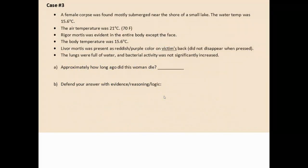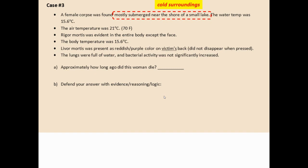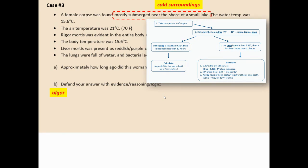Case three: a female corpse found mostly submerged near the shore of a small lake. Water temperature is 15.6 degrees — very cold surroundings — and air temperature is 21 degrees, about room temperature. There is rigor mortis information, the body has cooled to the lake temperature, and liver mortis data is present. Lungs are full of water; bacterial activity is not significantly increased. We'll combine several pieces of information to estimate time of death.